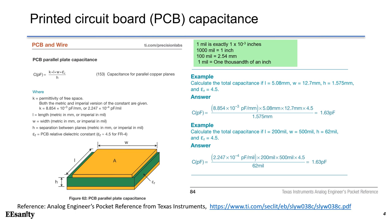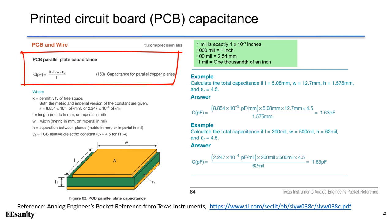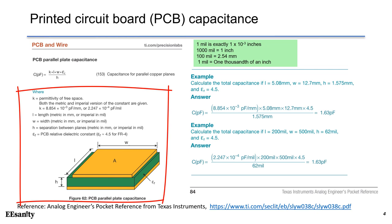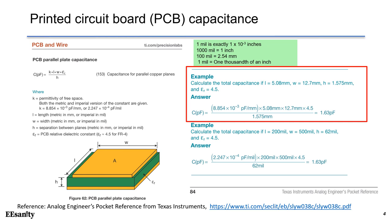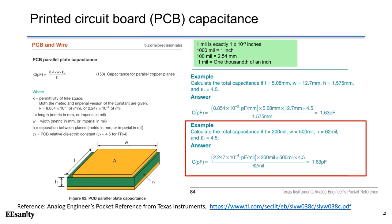Here is a reference from the Analog Engineer's Pocket Reference from Texas Instruments. On the left-hand side, we have an illustration of PCB parallel plate capacitance, defined by this equation: the capacitance in pF equals K times L times W times epsilon sub R, over H. On the right-hand side, we have an example using two different units — the first using length in millimeters, the second in mils (one thousandth of an inch), which is very popular in the USA.